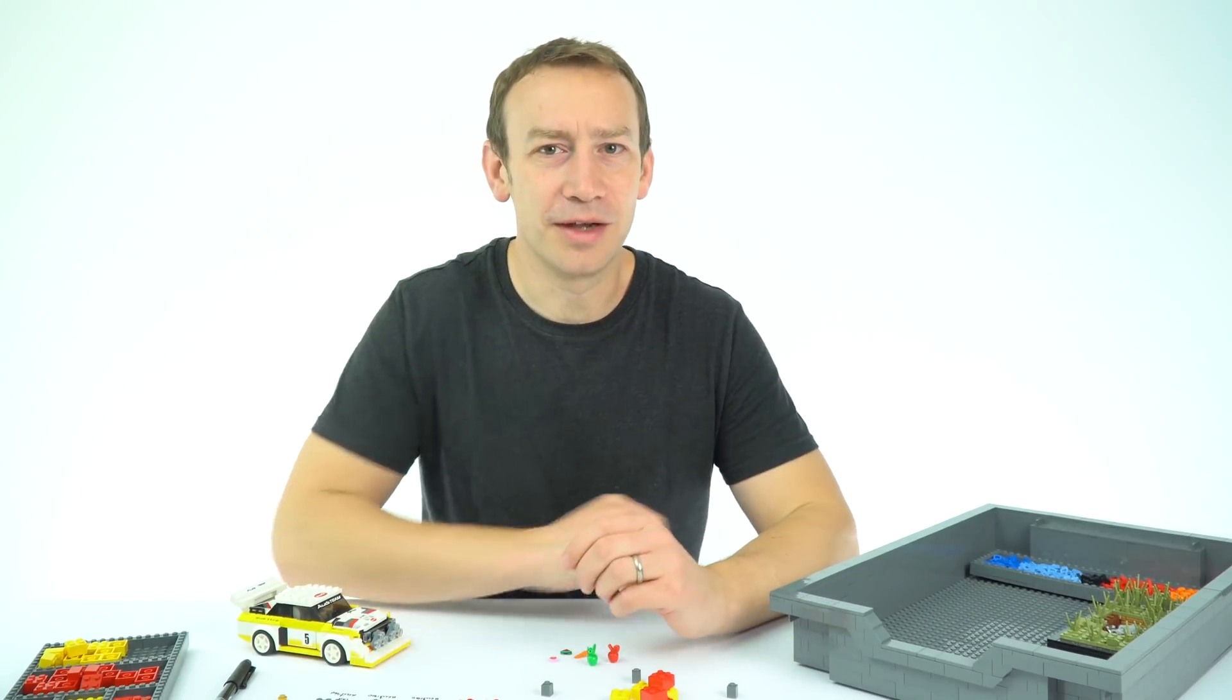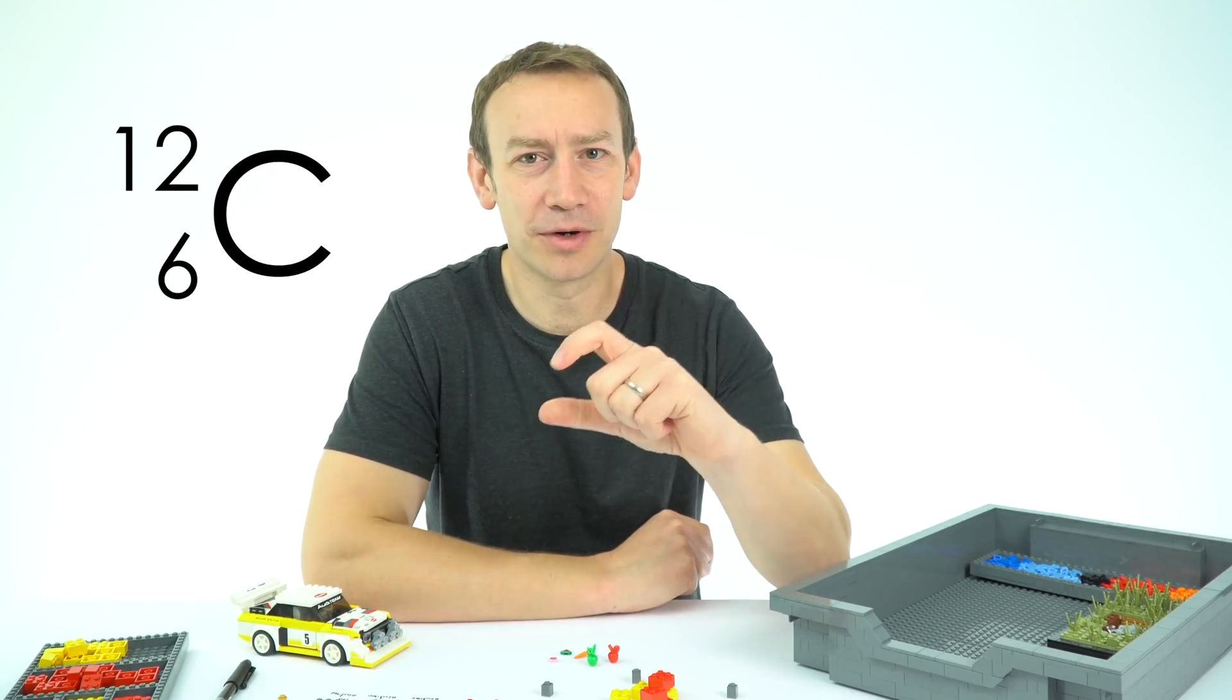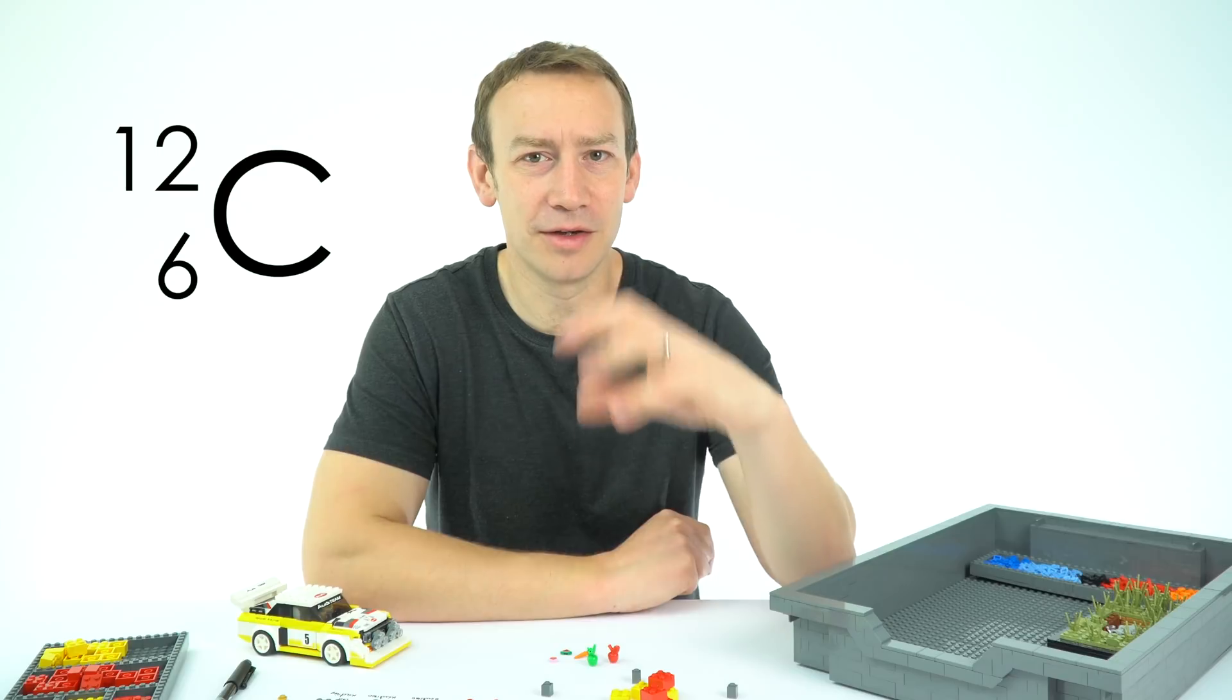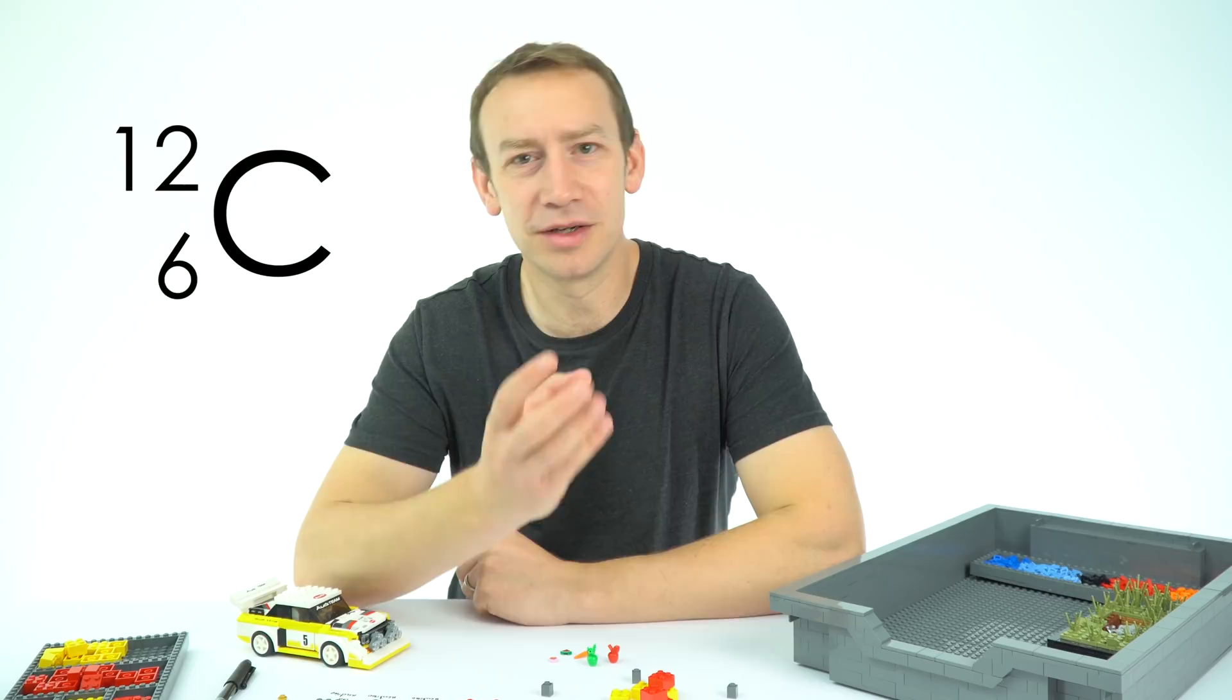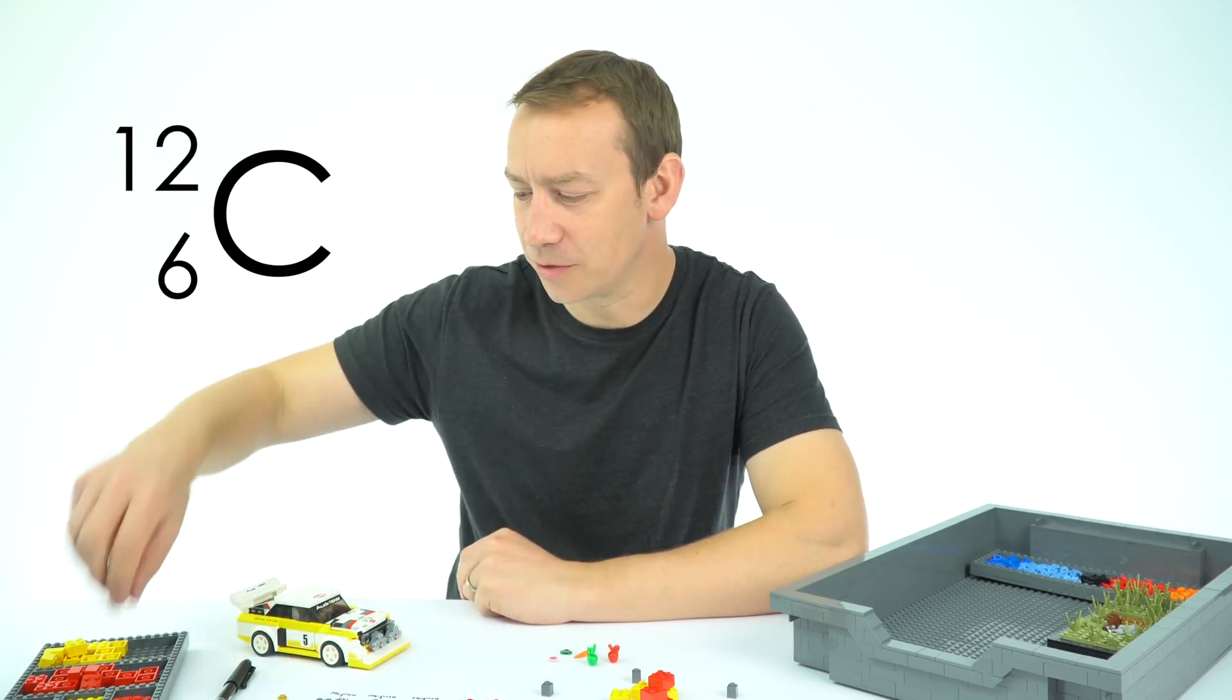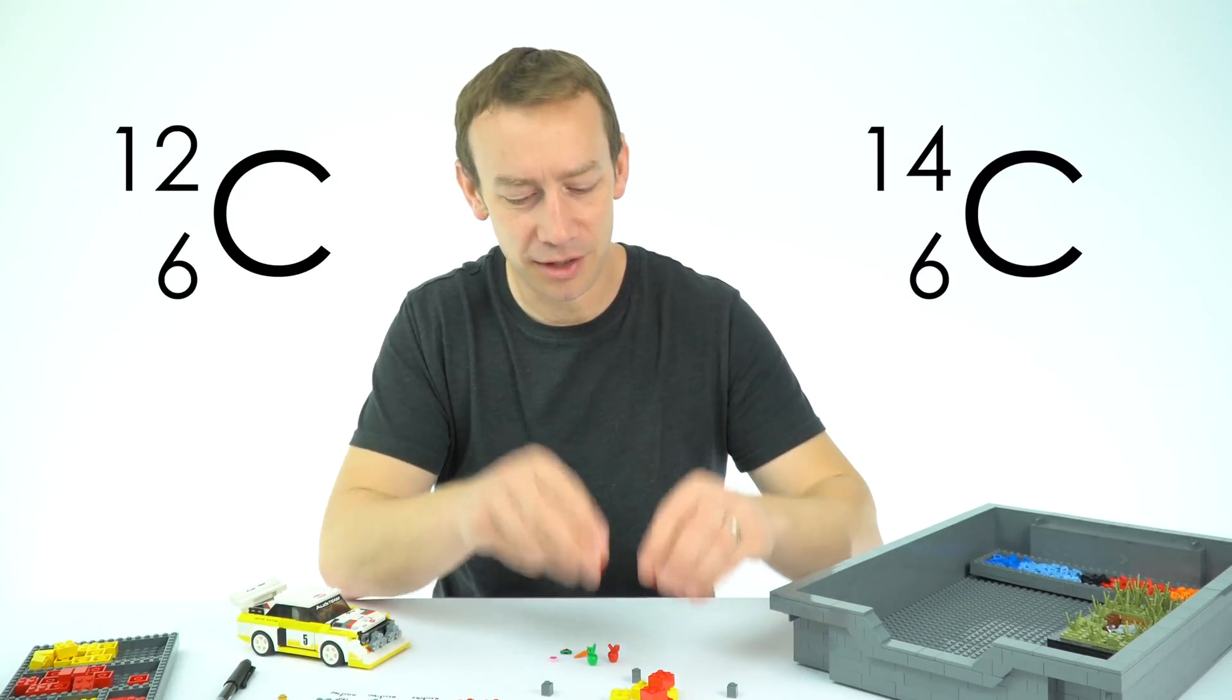But not all carbon is the same. Most of the carbon is called carbon-12, so that has six protons and six neutrons in the nucleus. But we also have things called isotopes. Now this is going to be the same element but it's got a different number of neutrons. So carbon-14 has an extra two neutrons in the nucleus.